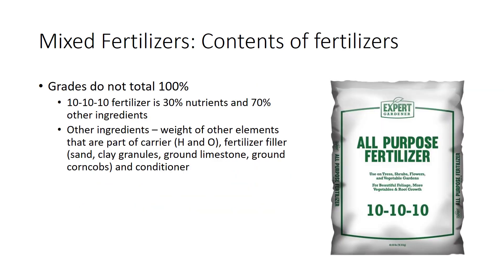Fertilizer grades never total 100%. For example, 10-10-10 fertilizer is 30% nutrient and 70% other ingredients. Primarily, the remainder of the fertilizer is the weight of the other elements that are part of the carrier, such as hydrogen and oxygen. A small percentage is fertilizer filler and conditioner. Fillers may be sand, clay granules, ground limestone, or ground corn cobs. They are used to bring a load of bulk fertilizer to a weight of 1 ton.